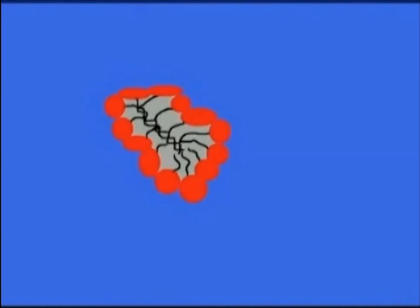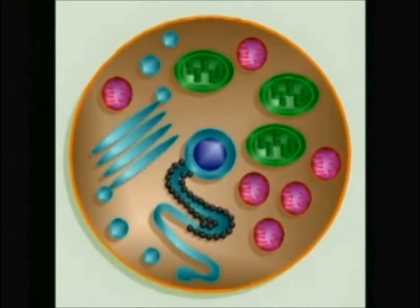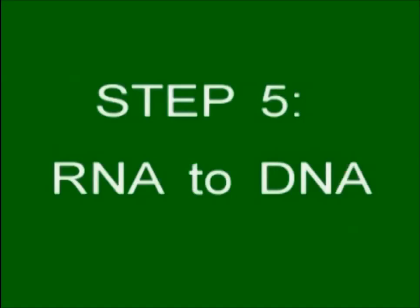There you have the first primitive cells. They look nothing like the complex cells we have today for a very good reason: over 3.7 billion years, they've evolved. I'll tackle the subject of evolution in another video.